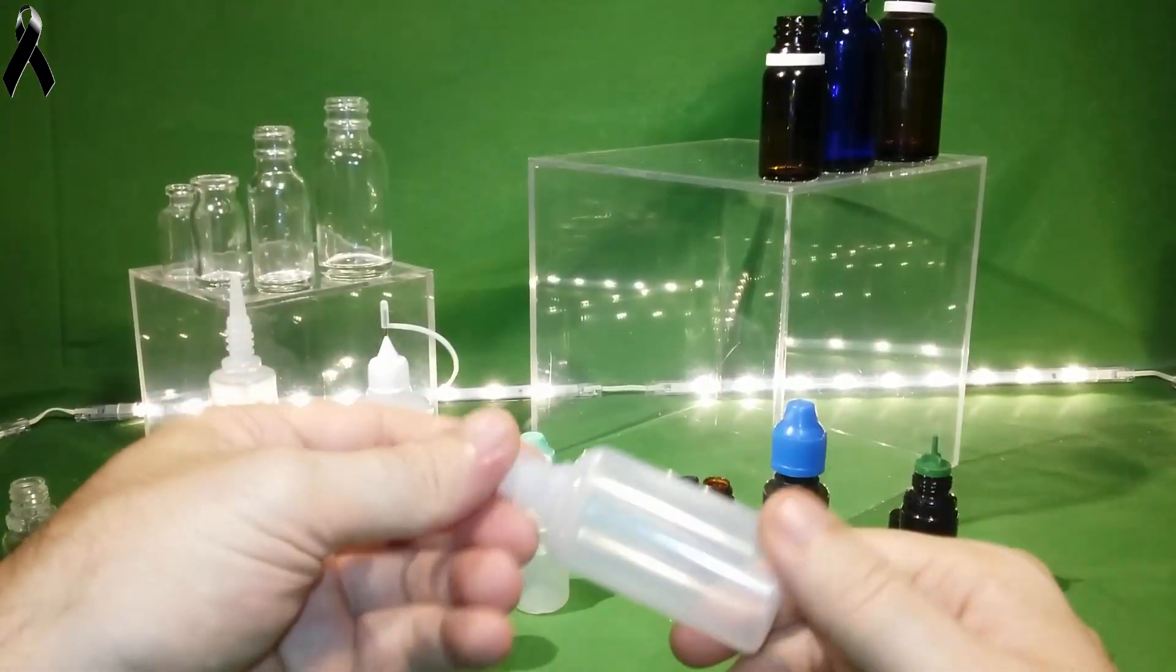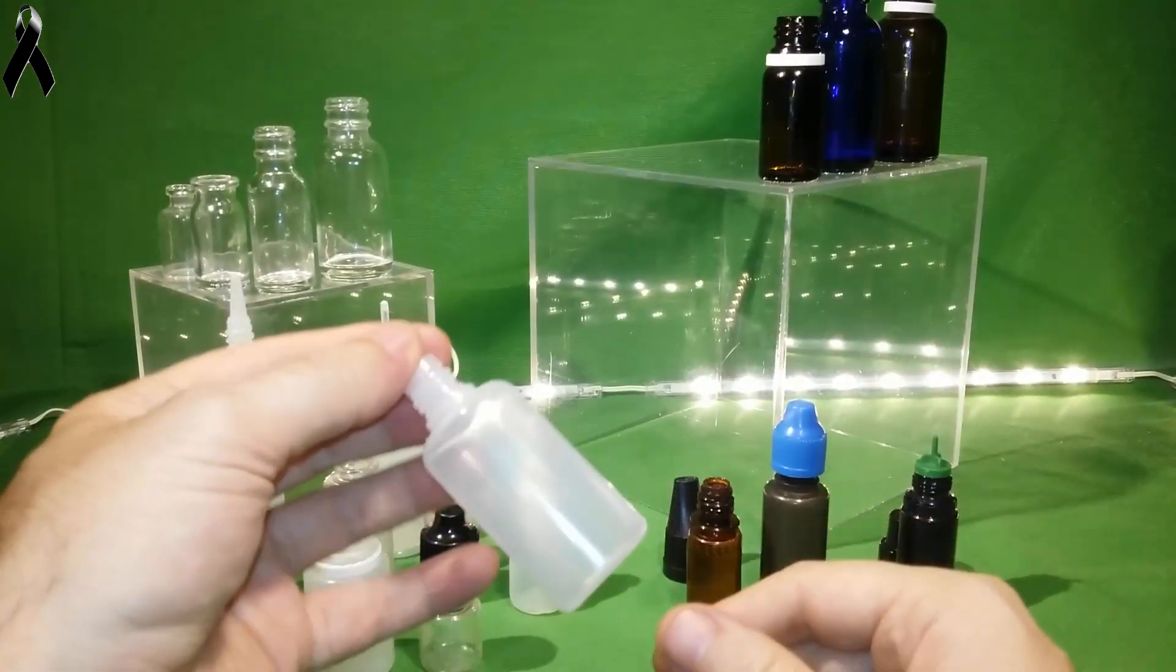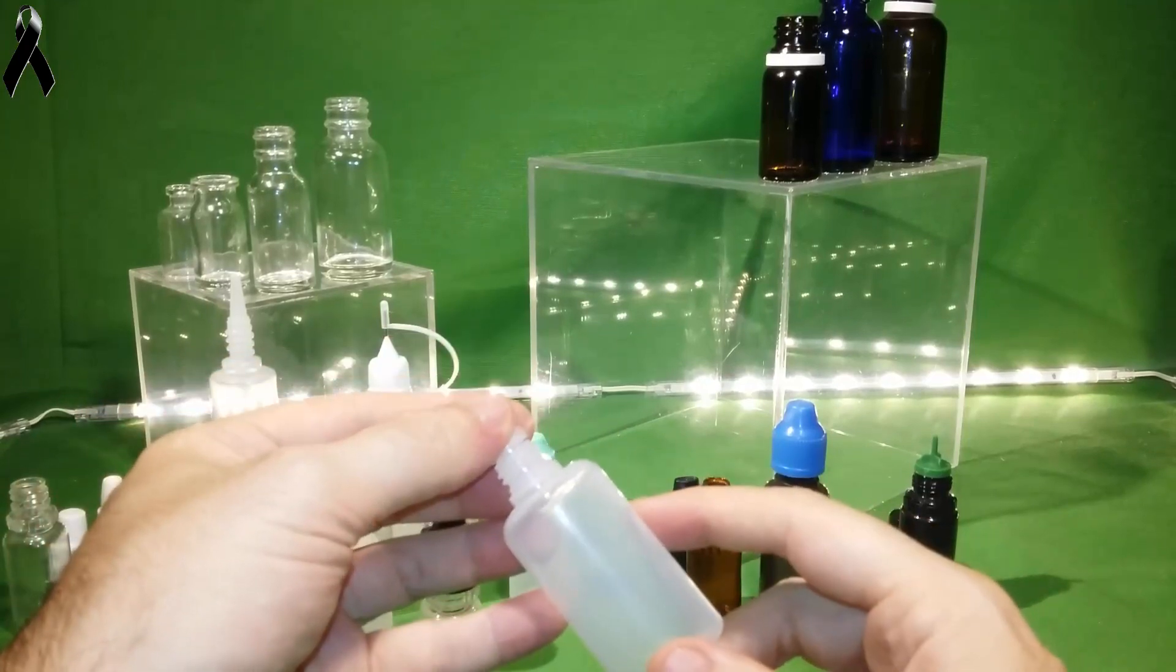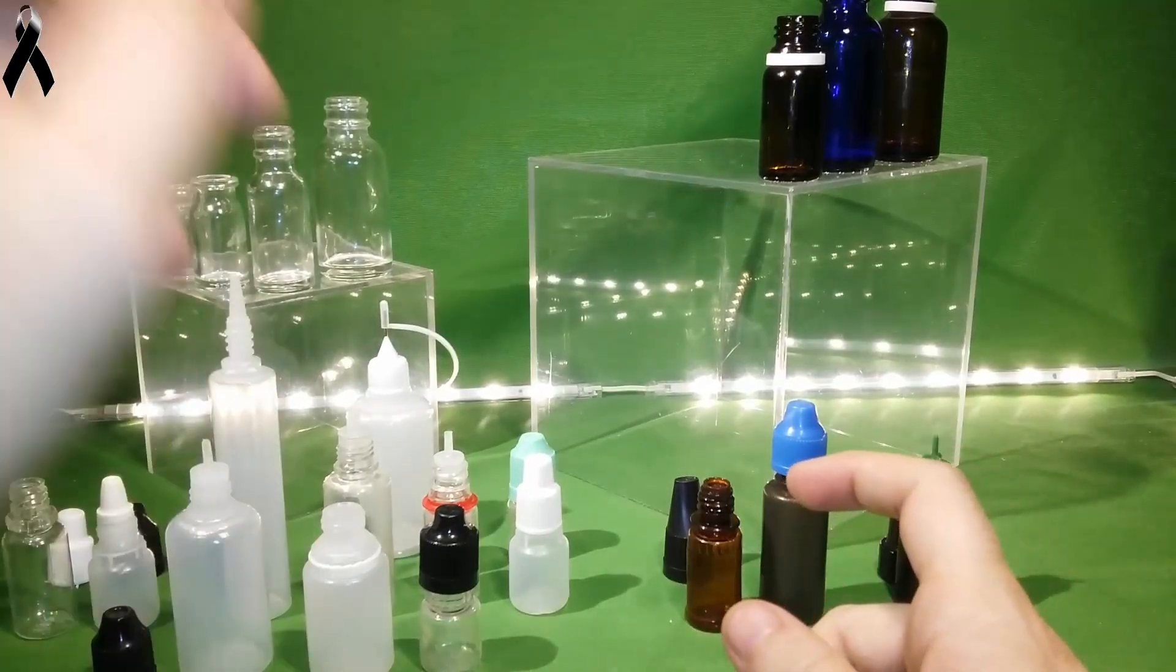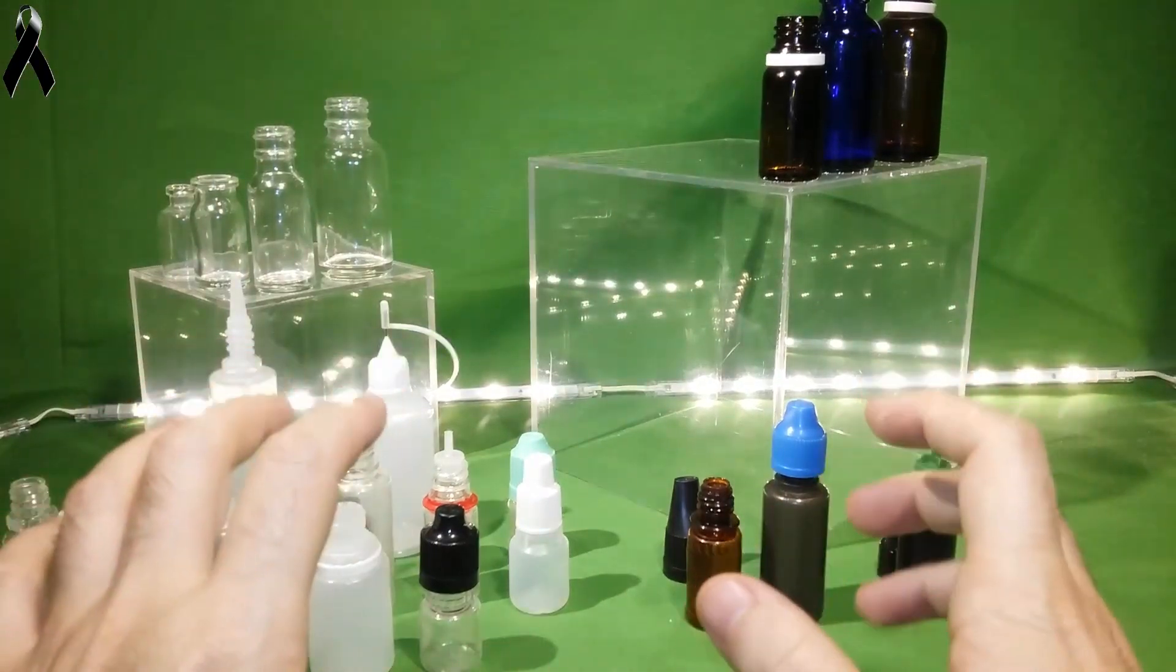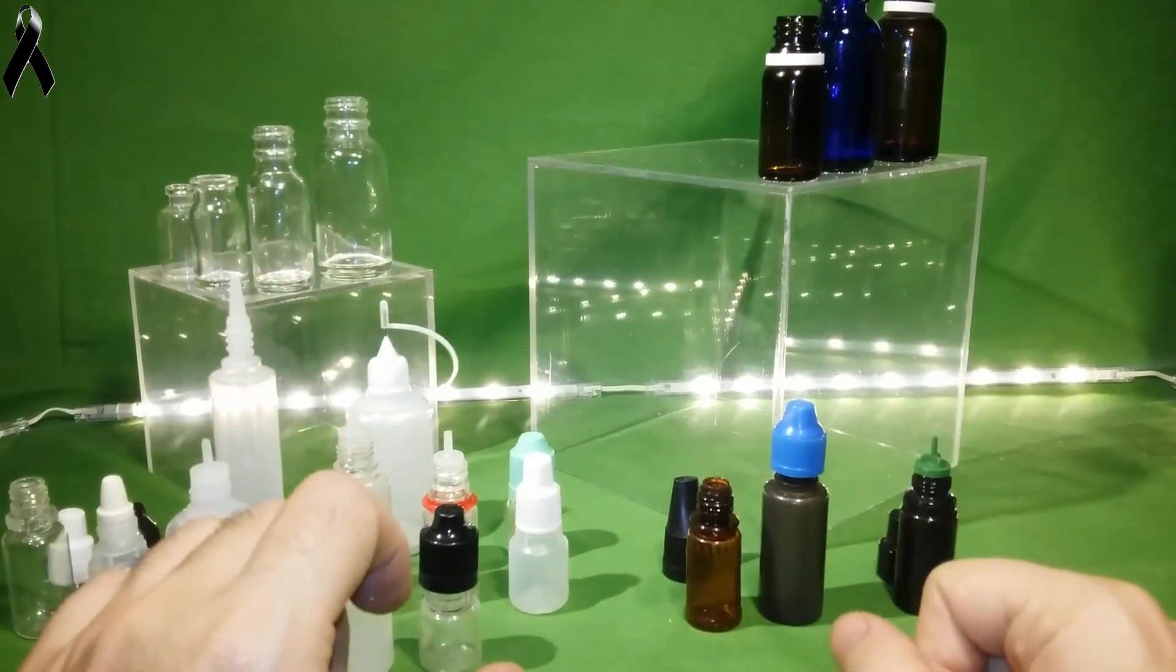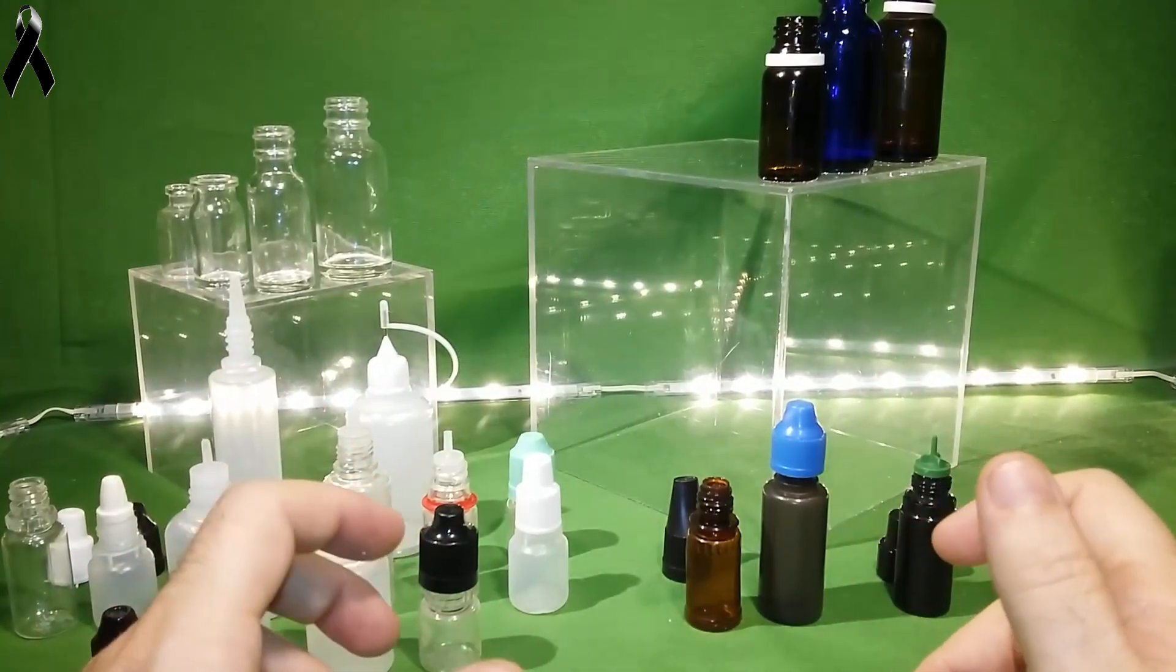Nos hemos comprado un bote de líquido X, pues el que sea, intentar guardarlo que no les dé la luz solar, en lugares frescos y que no les dé la luz solar. Y a ser posible que no les dé tampoco la luz de las bombillas, la luz de las bombillas también estropean los líquidos. Hay que mirar de resguardarlos de la luz.